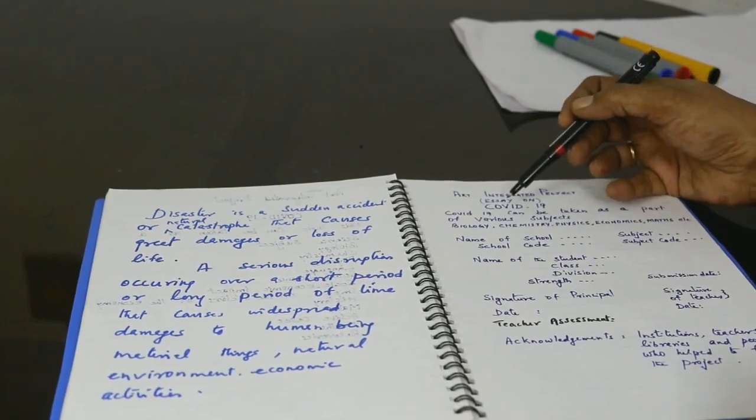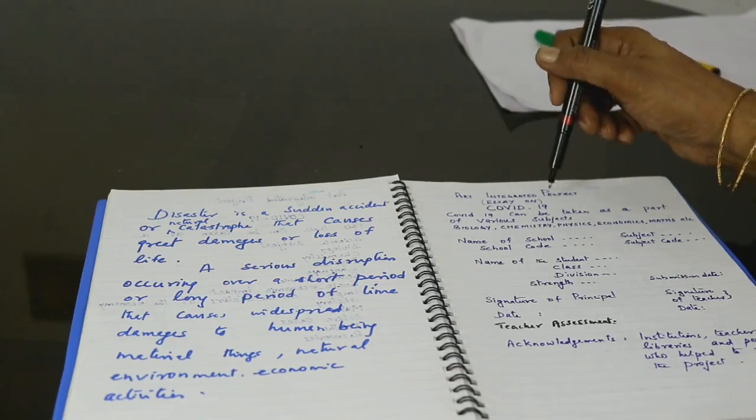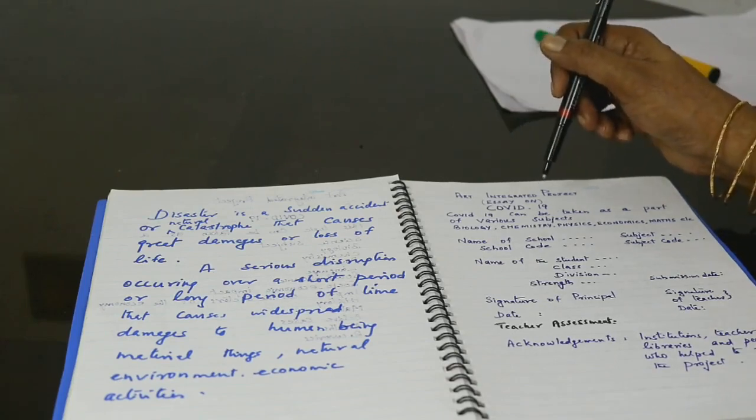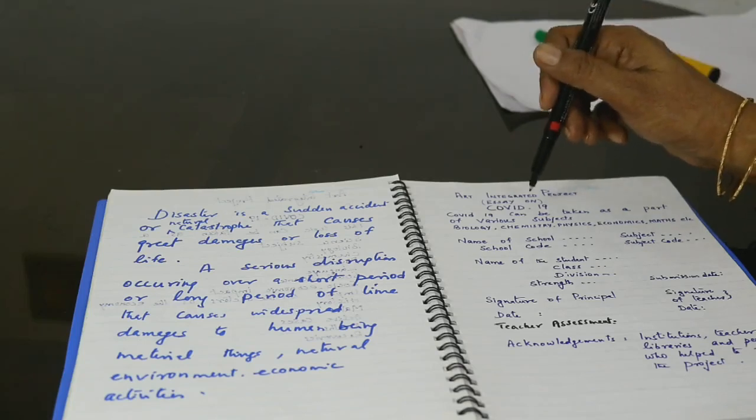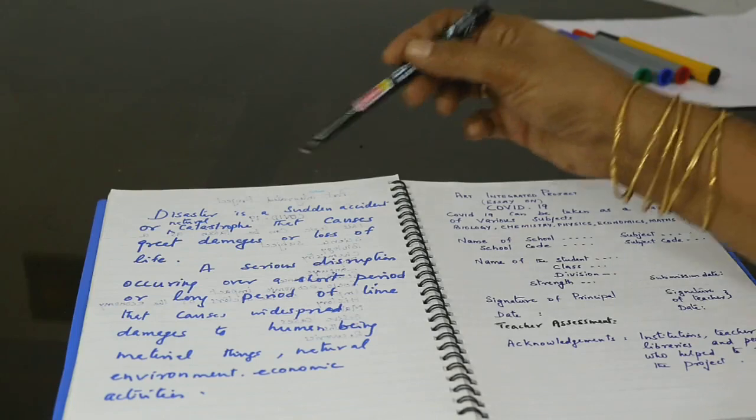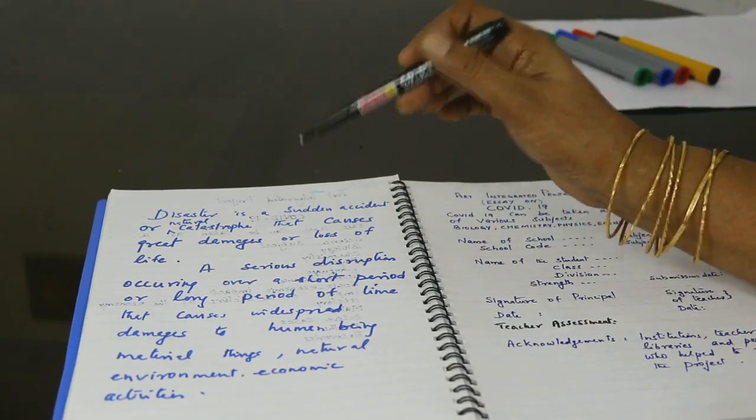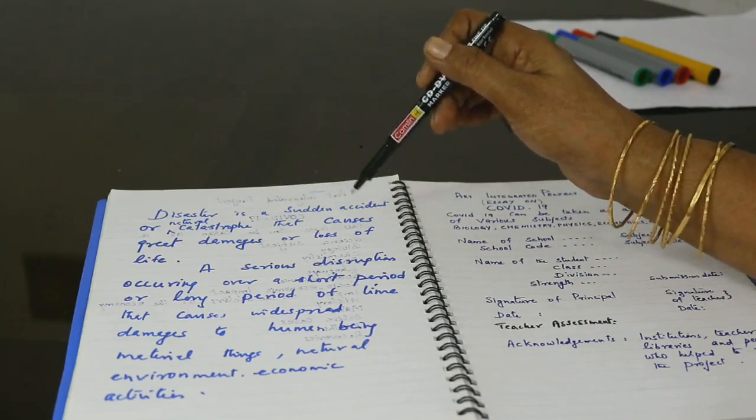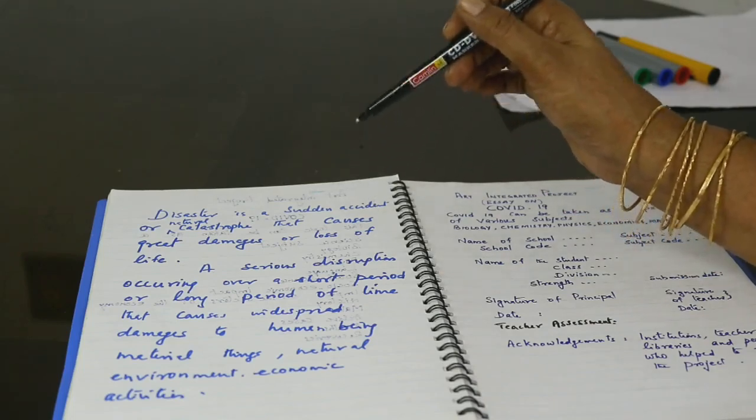Another question is that the COVID-19 can be taken as a disaster or not? Yes, it is a disaster. How is it a disaster? In order to know that whether it is a disaster, we have to see what is the definition of disaster. Disaster is a sudden accident or a natural catastrophe that causes great damages or loss of life.